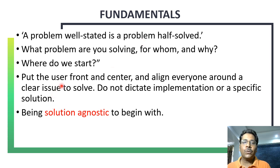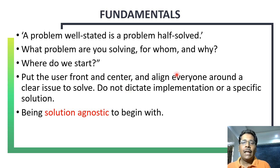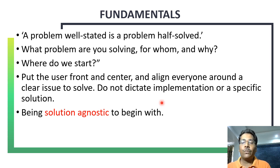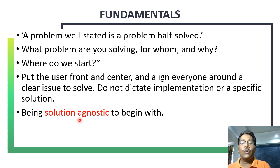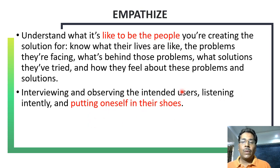The most important thing is that we put the user front and center. We align everyone around a clear issue to solve — for example, lack of user interaction on a website or a lack of clicks. At this stage, we are being solution agnostic: we are not thinking of solutions at the beginning; we are just trying to have a very clear overview of what the problems are.